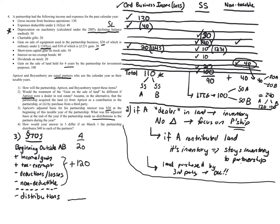That's question three: A's ending basis is $140. In question four, everything is the same as question three except there's a $40 distribution on March 1st. Under the simple distribution rule, distributions are treated as occurring at year-end. So we get $20 beginning basis plus $120 for a subtotal of $140, then subtract the $40 distribution, giving a final basis of $100. The $40 distribution is not taxable.